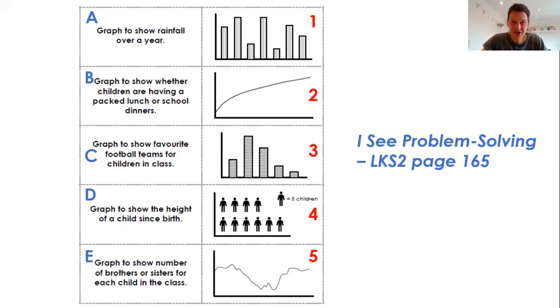So, A, graph to show rainfall over a year. Of course, that'd be a line graph, but it would be patterned like the five rather than two, because that will increase and decrease. Graph to show whether children are having packed lunch or school dinners. Well, children either have a packed lunch or school dinner, so the pictogram suits there for four.